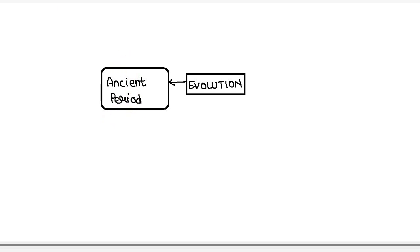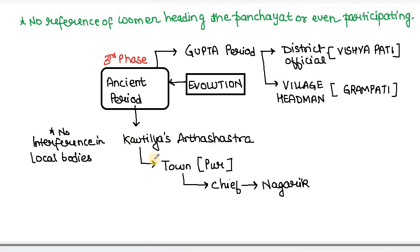The third phase is the Ancient Period. In Kautilya's Arthashastra, the town was known as Pur and its chief was Nagarik. The king never interfered in the administration of local bodies because the will and desires of the people were supreme. In the Gupta period, we see the existence of local self-government with district official Vishyapati and village headman Grampati. Notably, in the ancient period, there were no women who headed or participated in the panchayat.